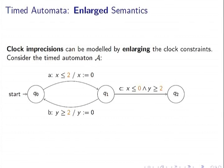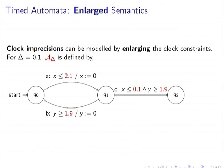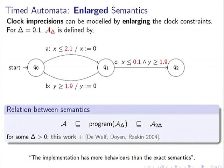Consider a timed automaton with a clock constraint x < 2. When you evaluate this constraint in the real system, it can only guarantee that x < 2 + delta, because of imprecisions. This is an example for delta = 0.1. Similarly, y > 2 becomes y > 2 - delta. So we enlarge all the guards to model these imprecisions.